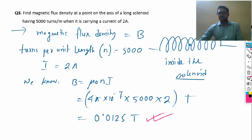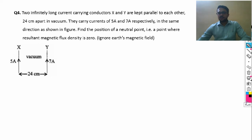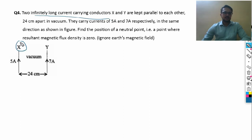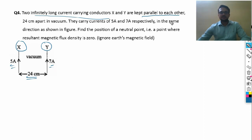Question number 4: Two infinitely long current-carrying conductors X and Y are kept parallel to each other, 24 centimeters apart. They carry currents of 5 ampere and 7 ampere respectively in the same direction. Find the position of the neutral point — the point where the resultant magnetic flux density is zero — ignoring Earth's magnetic field.